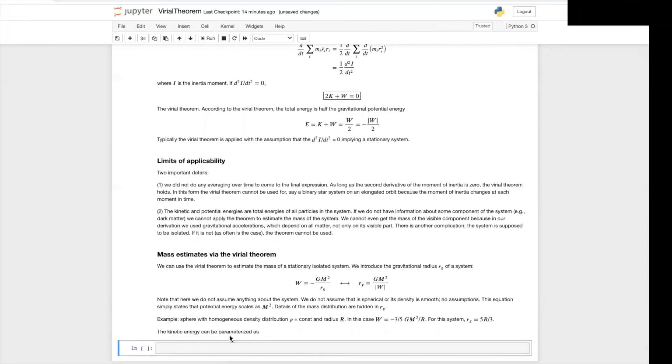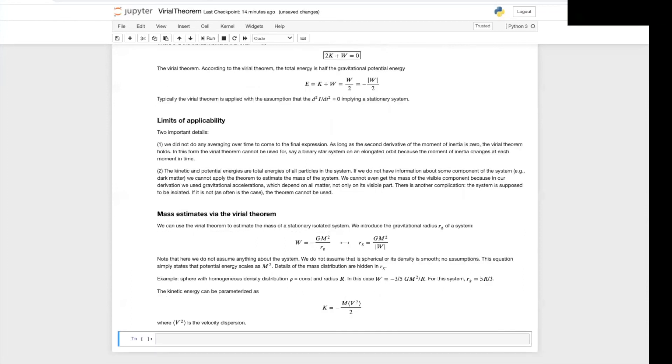As for the kinetic energy, it can be parameterized as a typical velocity of the system, where we're going to write this as the velocity dispersion. Again, there is no assumption here. This is always valid.